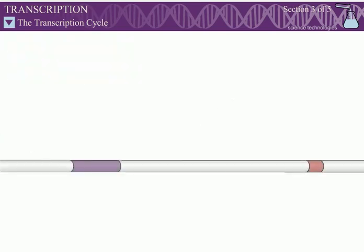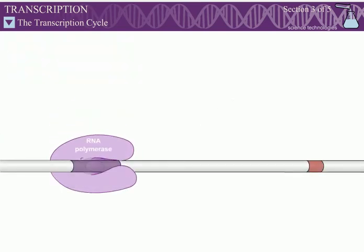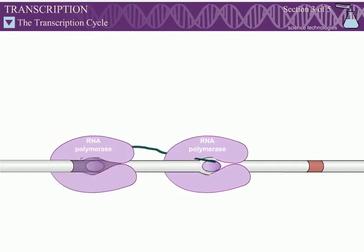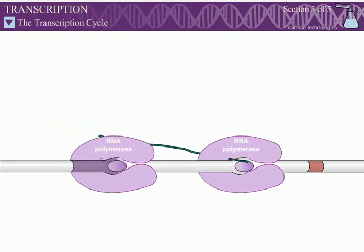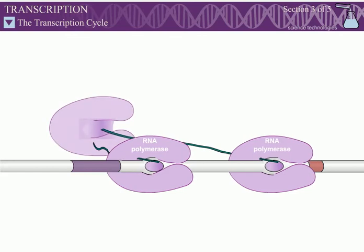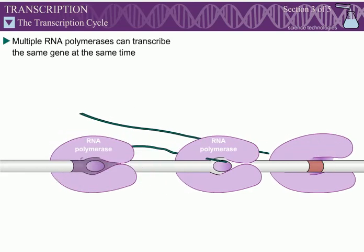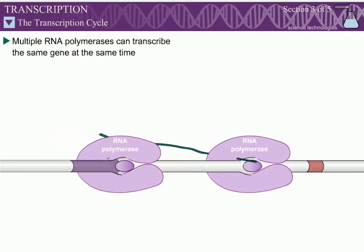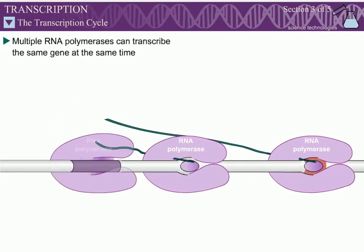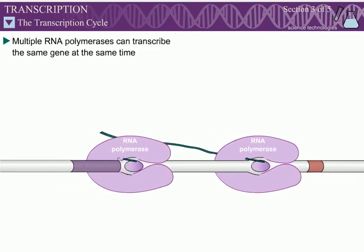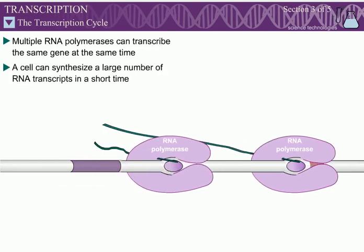Since RNA polymerase dissociates the RNA transcript from the DNA as it is transcribed, multiple RNA polymerases can transcribe the same gene at the same time. This allows a cell to synthesize a large number of RNA transcripts from a single gene in a short time.